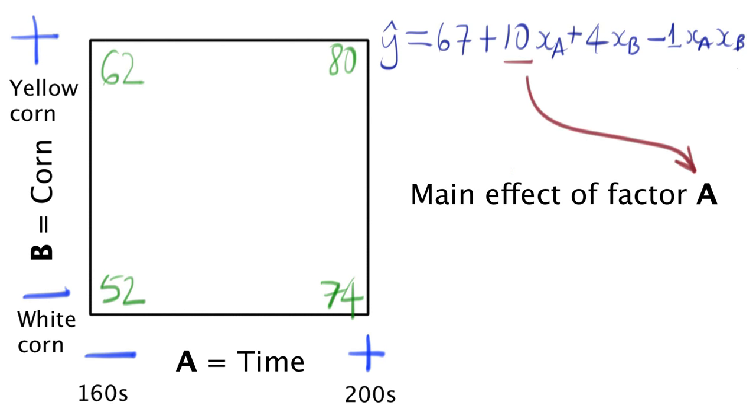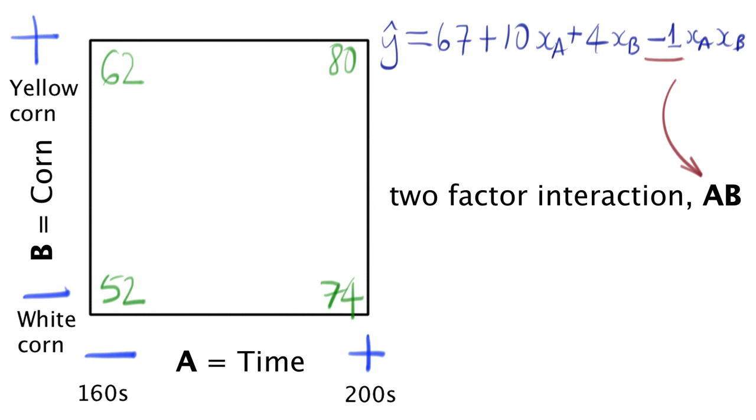10 is the effect of factor A, the cooking time. This is what we call the main effect for factor A. 4 is the effect of factor B, the kind of popcorn we used. And lastly, the minus 1 is the two-factor interaction term. Do you recall how we calculated those numbers by hand? Go back to the videos in the previous module if you are not sure.